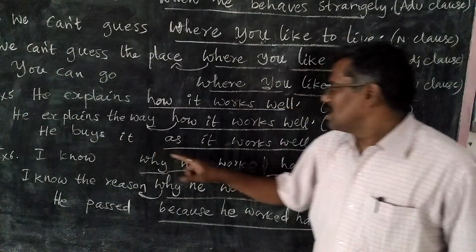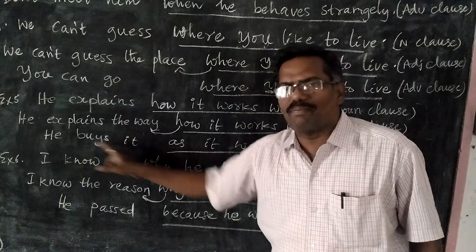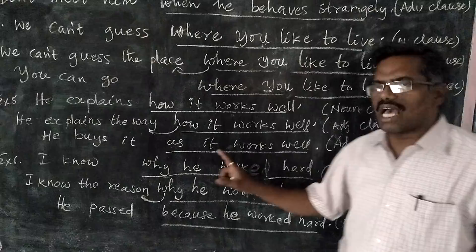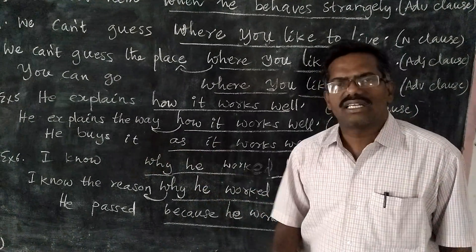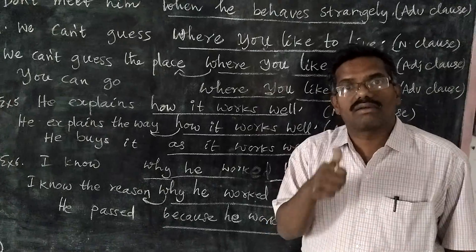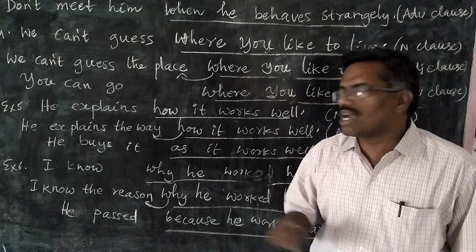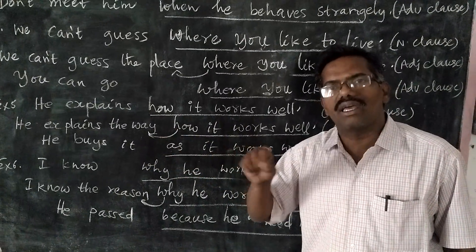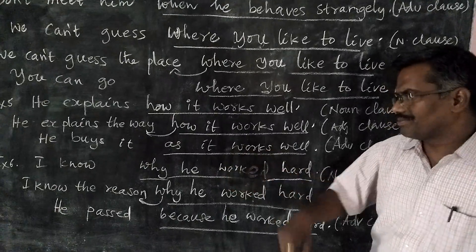Third: 'He buys it as it works well.' Why does he buy it? Because 'as it works well' is the answer — it answers 'why,' not 'what.' Whenever a clause answers a WH word other than 'what,' it is called adverb clause.